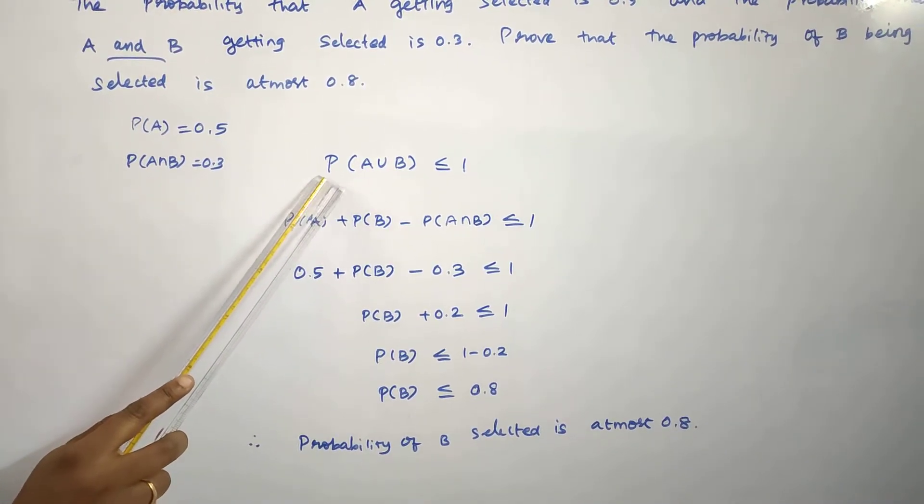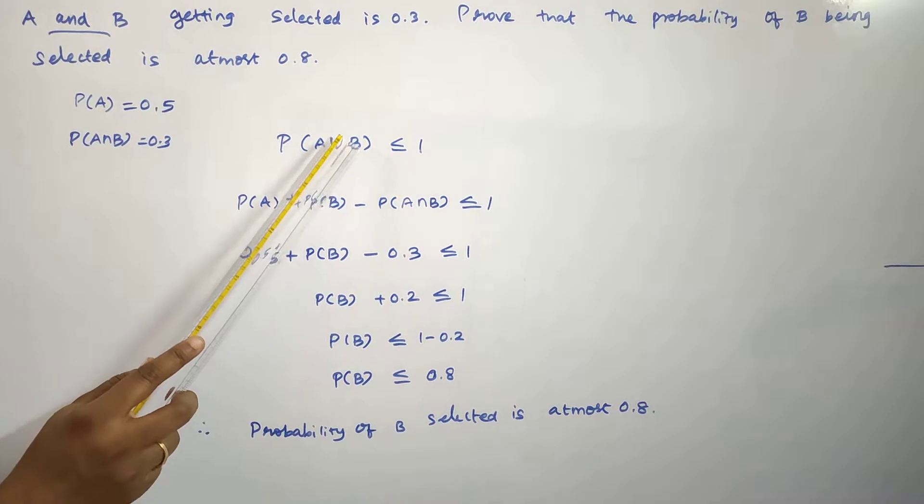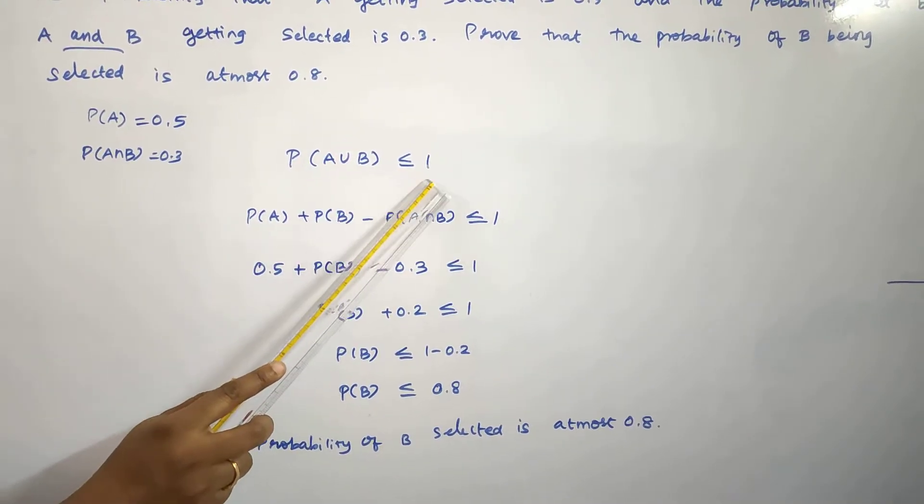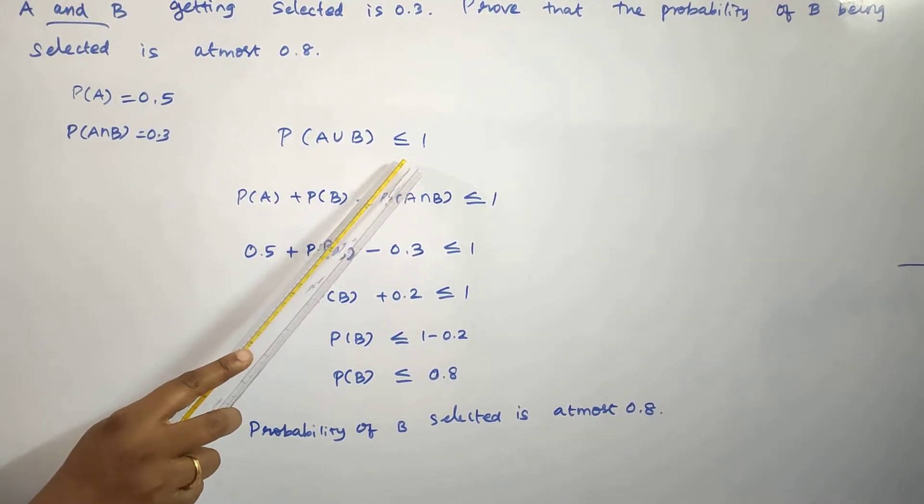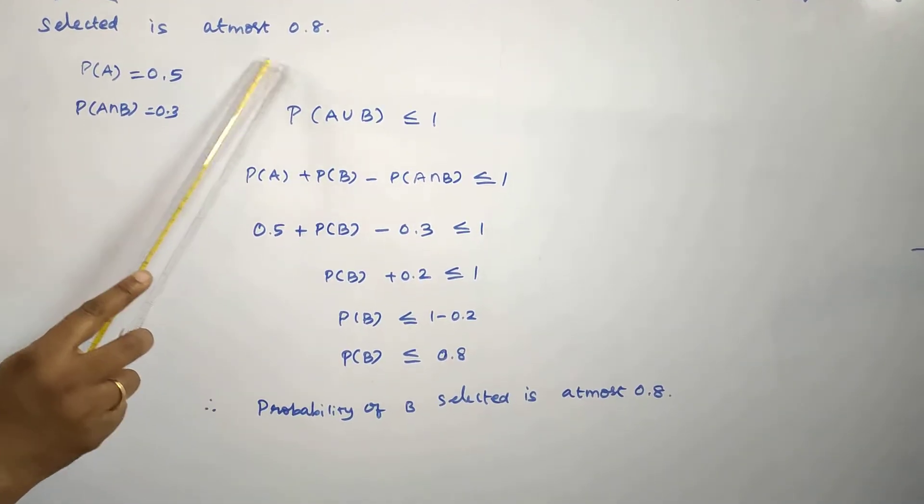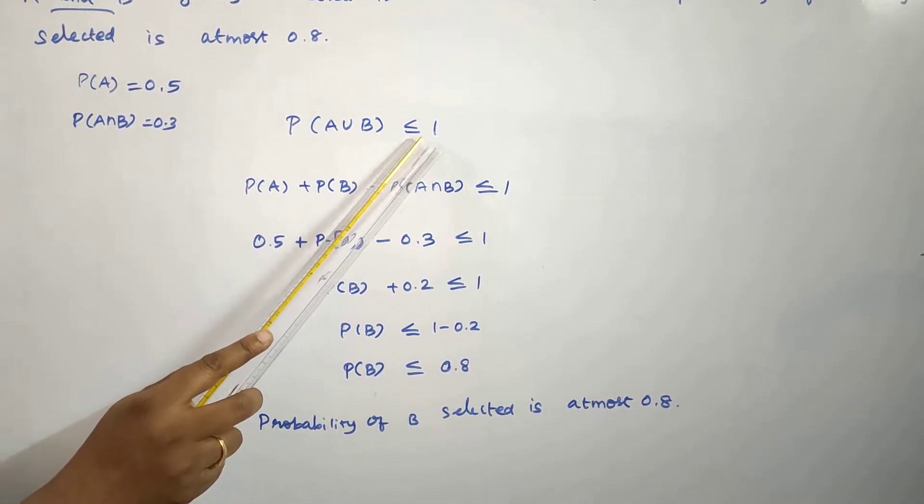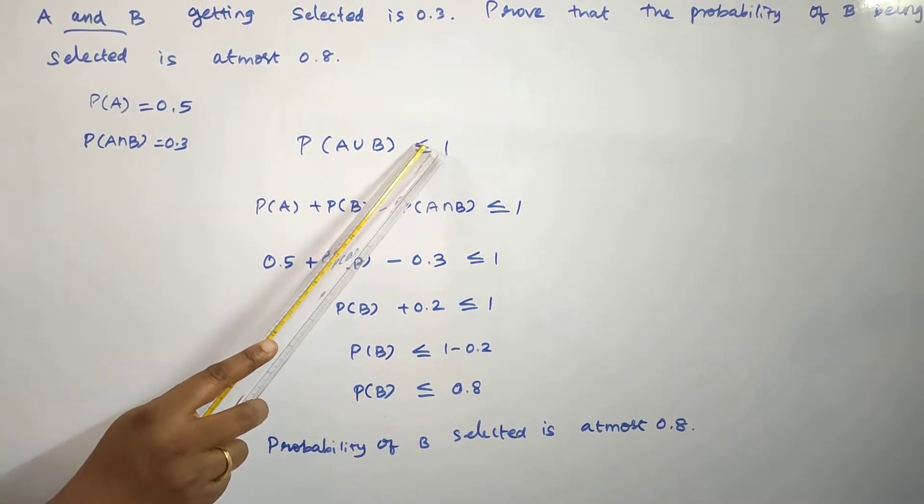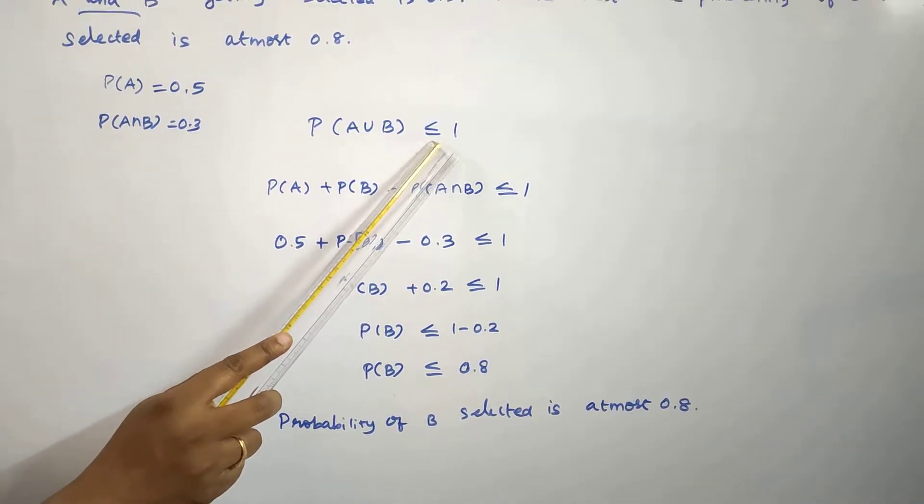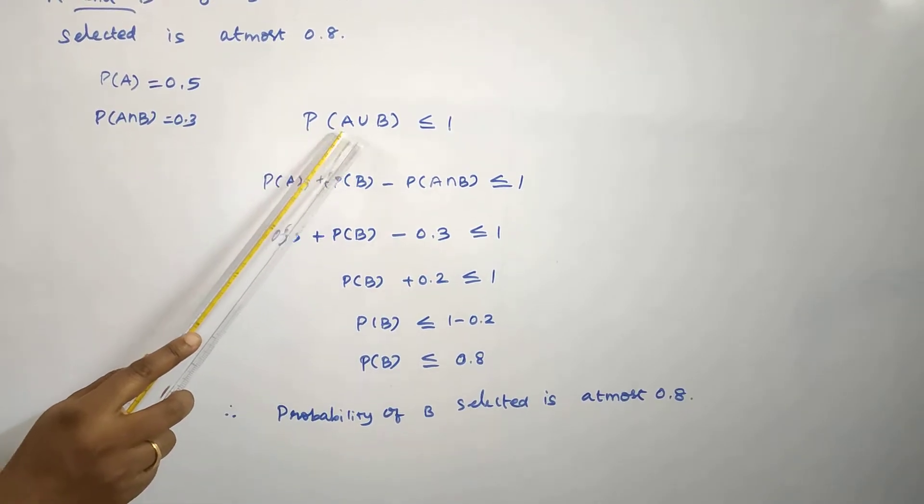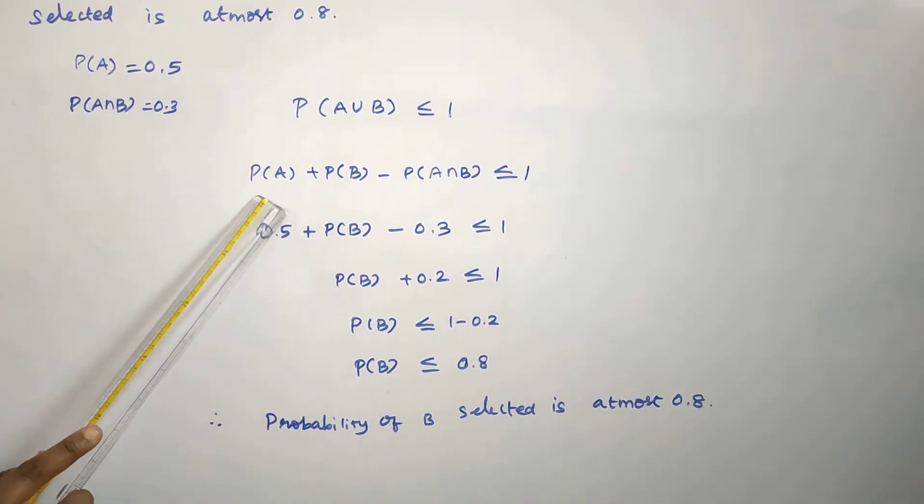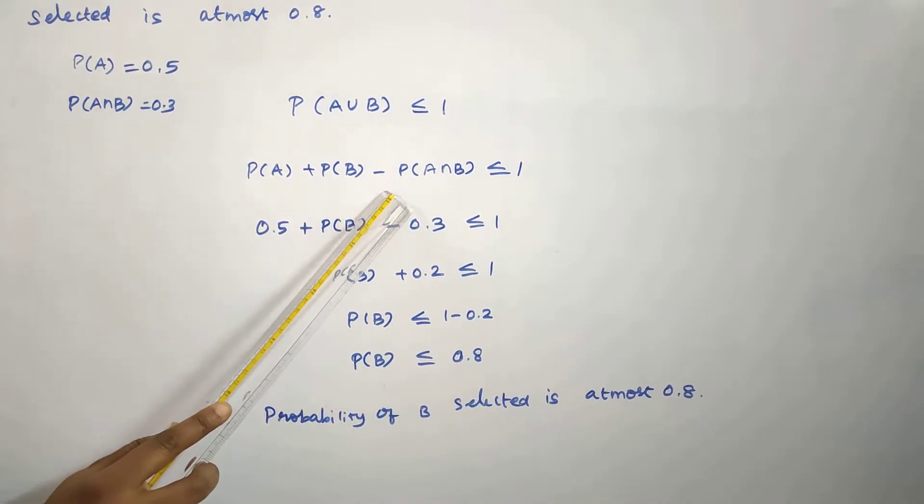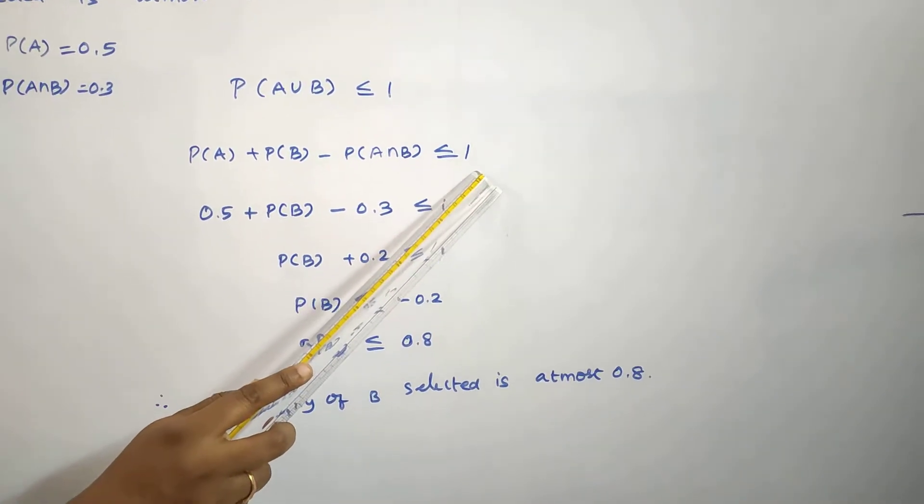We already know P of A union B is less than or equal to 1. The probability of any event should be less than or equal to 1. The probability of 1 is 1. At most is 1. P of A union B formula: P of A plus P of B minus P of A intersection B is less than or equal to 1.